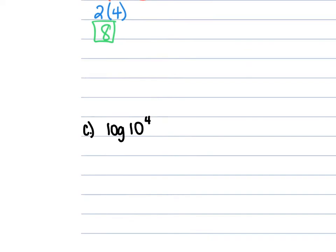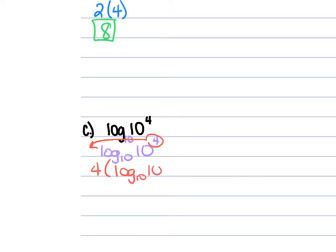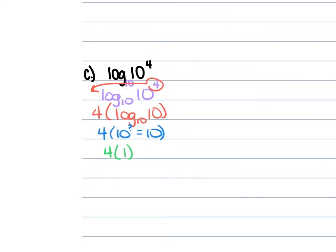For C, we have log of 10⁴. This one doesn't have a base written, and when you never have a base, it's an automatic 10. So this is log₁₀ of 10⁴. The 4 comes out front: 4 times log₁₀ of 10. 10 to what power is 10? The first power. So this is 4 times 1, which is 4.